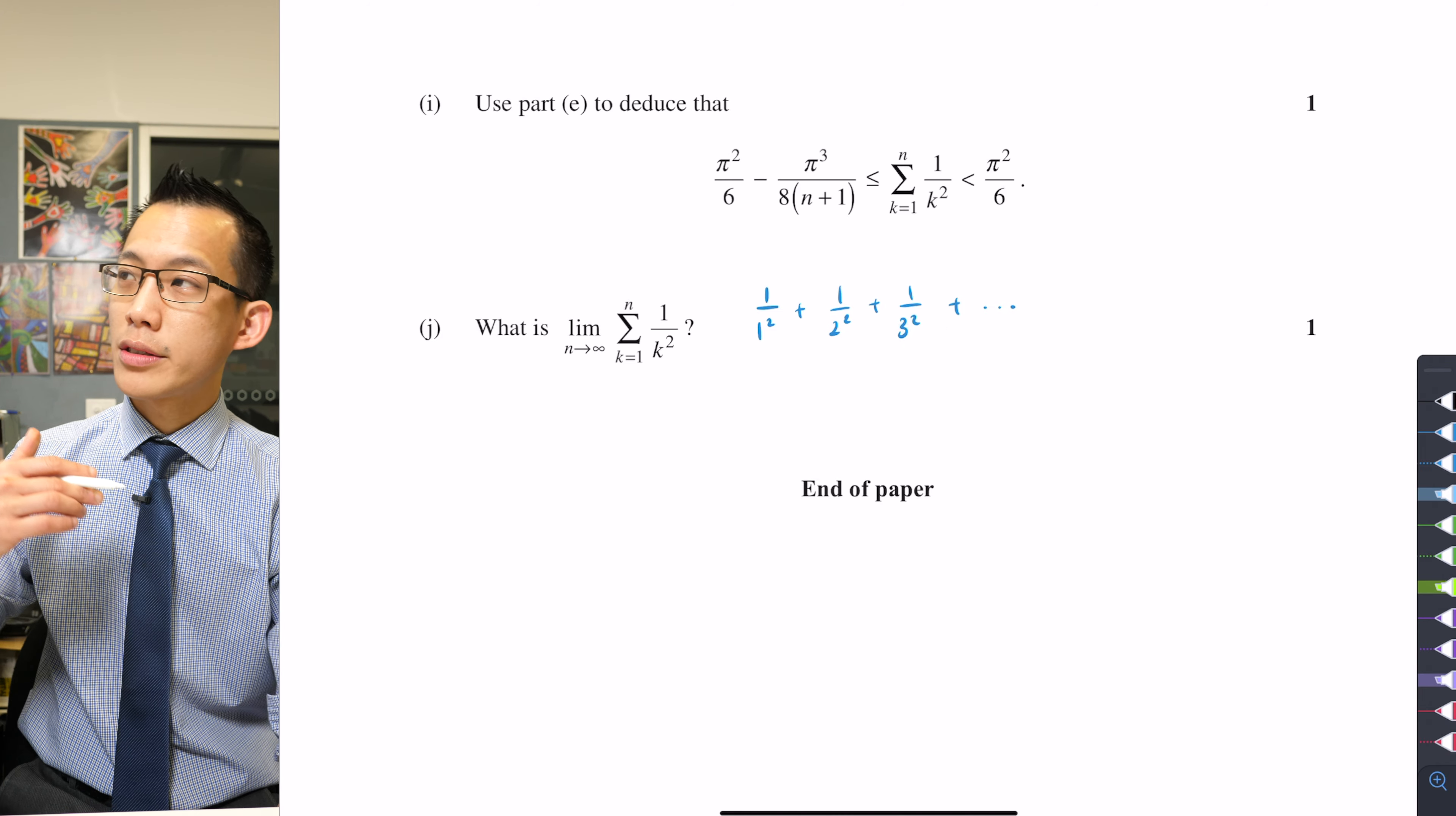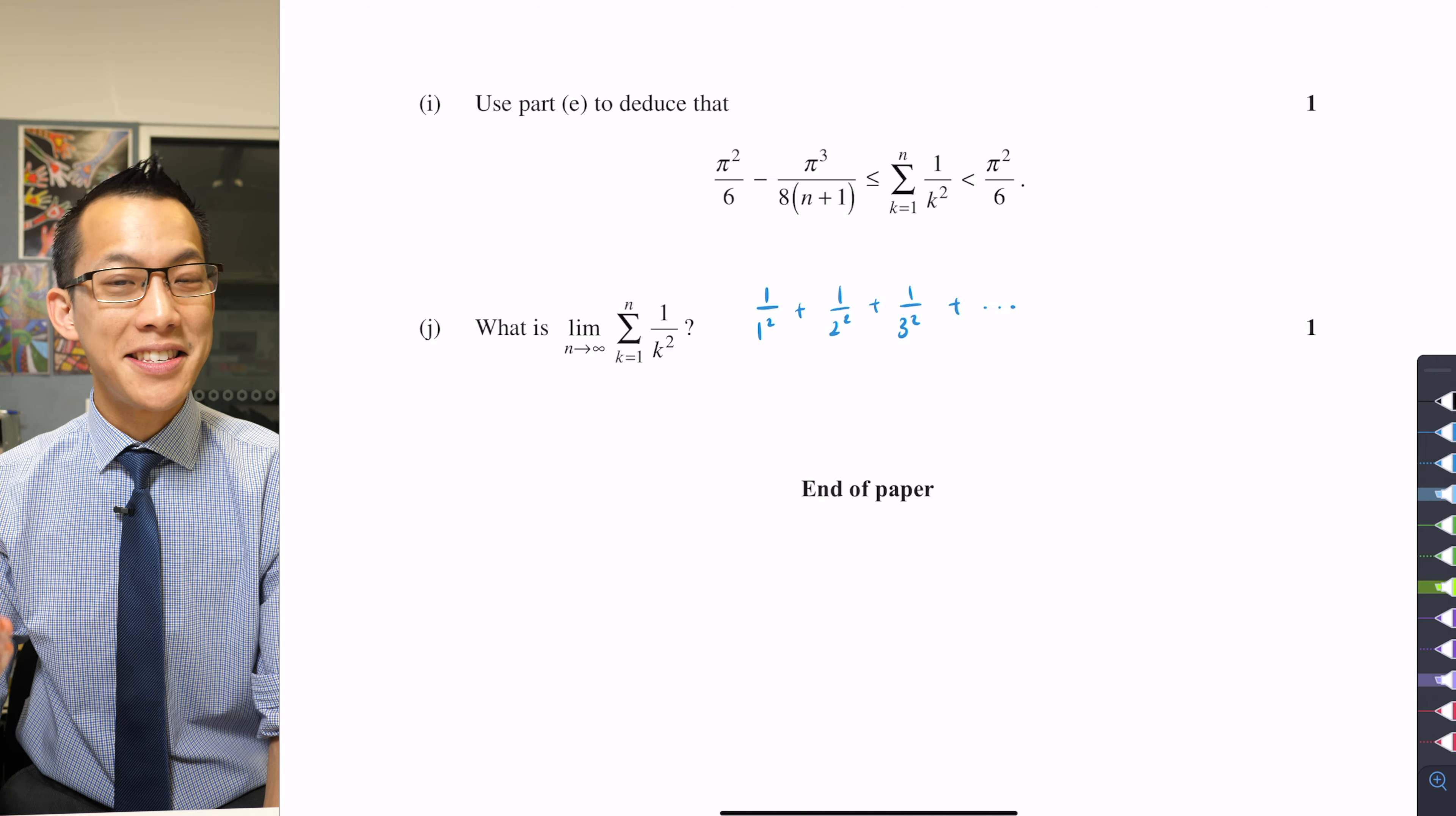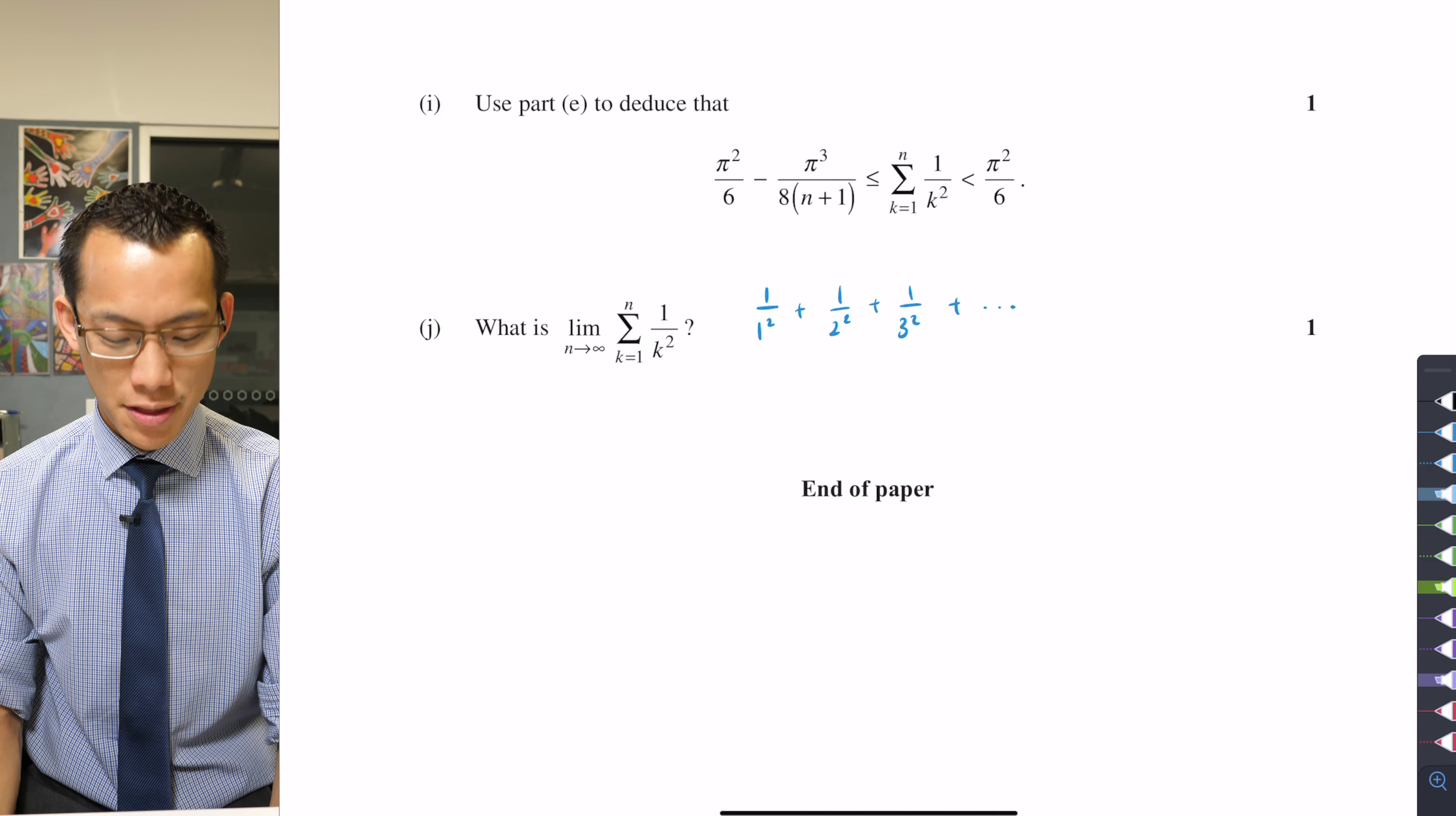So what Riemann did was he said, well, what if it wasn't just squared? What about if you cubed the denominators or raised them to the fourth power or the fifth? And he named this function what we now call the Riemann zeta function. And the Riemann zeta function is the subject of what is currently one of the most famous unsolved problems in the world in mathematics, and that's the Riemann hypothesis.